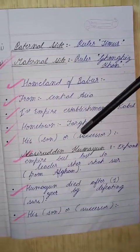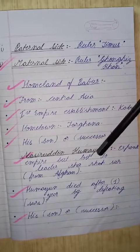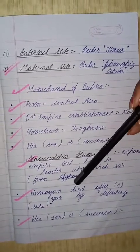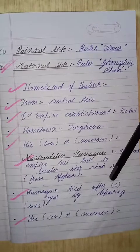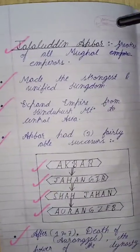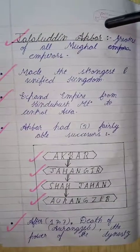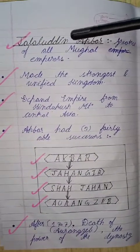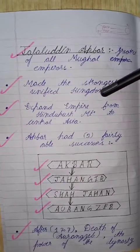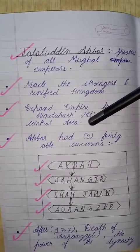Babur's son and successor was Humayun. He expanded the empire but lost to leader Sher Shah Suri from Afghanistan. Humayun died after one year of defeating the Suris. His son and successor was Jalaluddin Akbar, the greatest of all Mughal emperors, who made the strongest and most unified kingdom and expanded the empire from the Hindu Kush mountains to Central Asia.